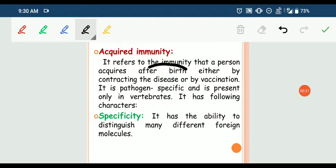When we come into contact with a pathogen, acquired immunity is developed. Acquired immunity has two basic properties: specificity and memory.